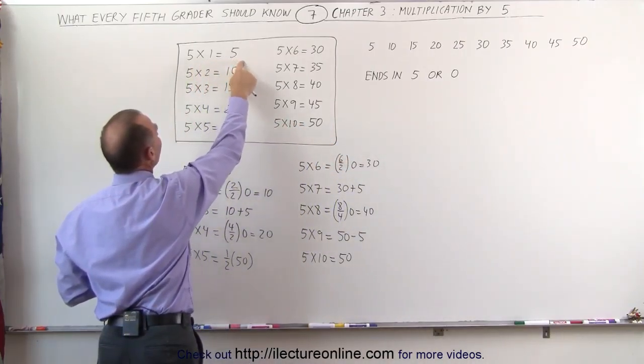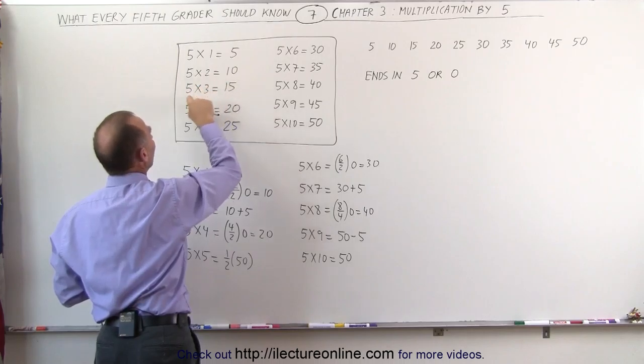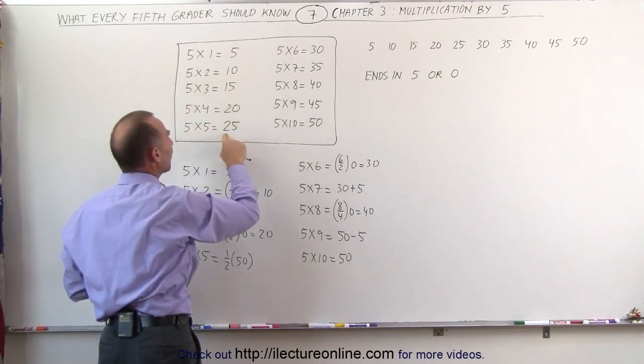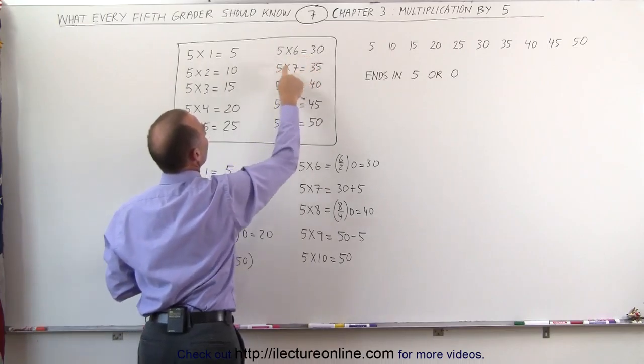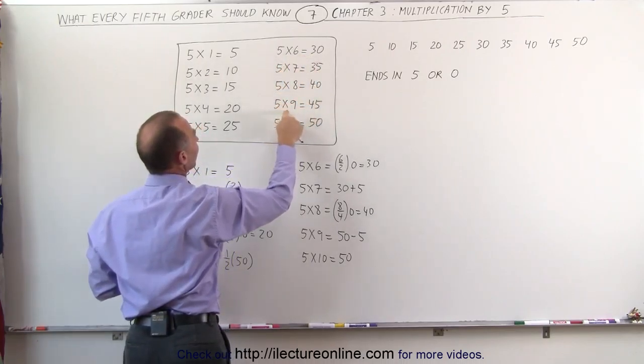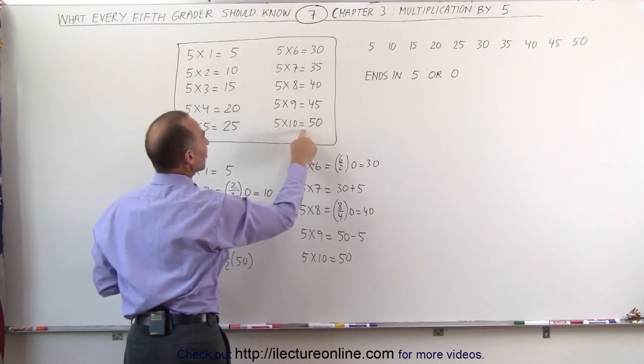So 5 times 1 is 5, 5 times 2 is 10, 5 times 3 is 15, 5 times 4 is 20, 5 times 5 is 25, 5 times 6 is 30, 5 times 7 is 35, 5 times 8 is 40, 5 times 9 is 45, and 5 times 10 is 50.